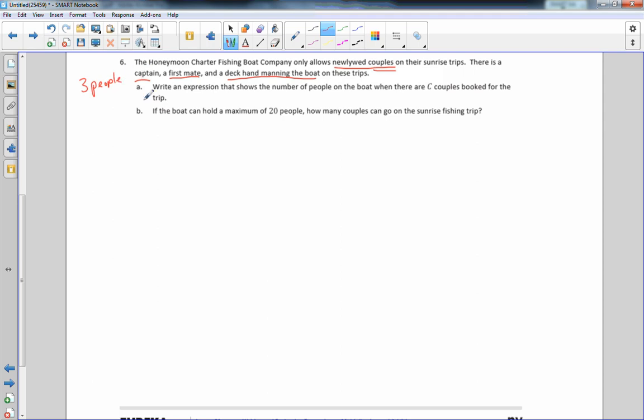Part A says write an expression that shows the number of people on the boat when there are C couples booked for the trip. An expression does not have an equal sign, so it is just going to be the number of C couples.